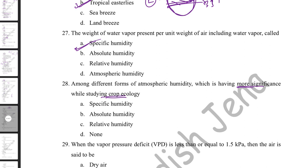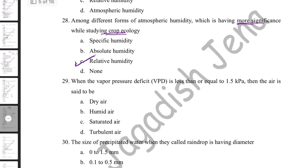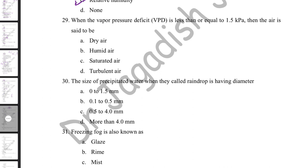When the vapor pressure deficit (VPD) is less than or equal to 1.5 kPa, the air is said to be humid. VPD is the saturated vapor pressure minus actual vapor pressure. If VPD is less than 1.5 kPa, that is humid air; if more than 2.5 kPa, it is dry air.